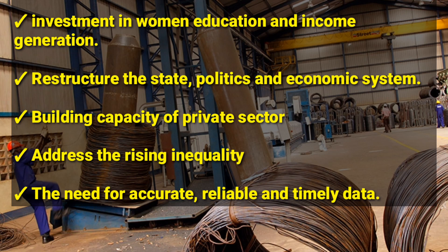Another thing that can be done is building capacity for the private sector. There is need to operationalize the local content policy and the 'Buy Uganda, Build Uganda' strategy. This is what countries such as the USA, Britain, China, India, Singapore, South Africa, and South Korea did to develop. There is need to look at procurement positively as a social and economic tool, promoting local products to lead to economic transformation.